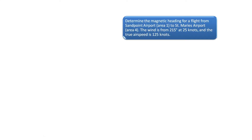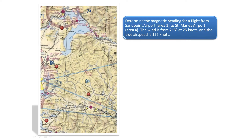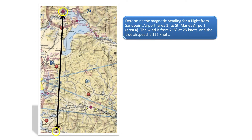Determine the magnetic heading for a flight from Sandpoint Airport to St. Mary's Airport. The wind is from 215 degrees at 25 knots and the true airspeed is 125 knots.